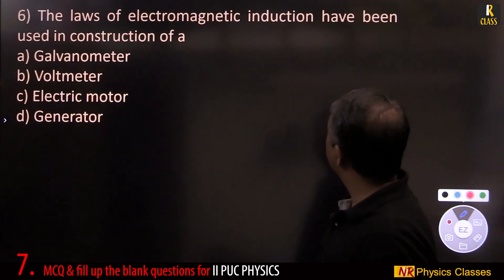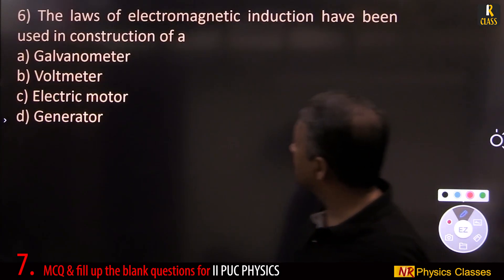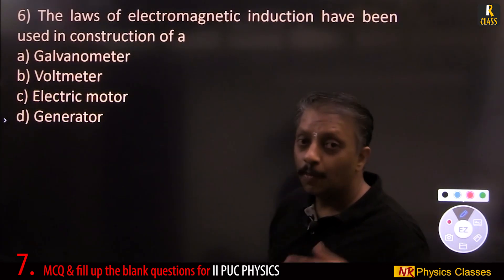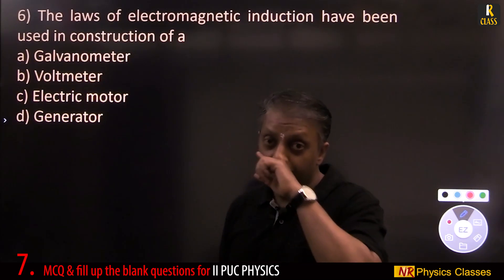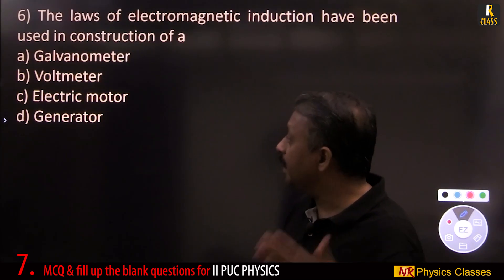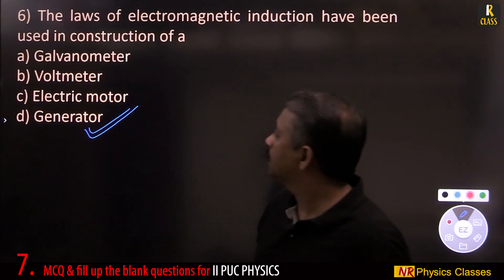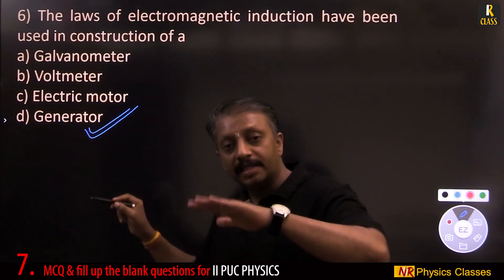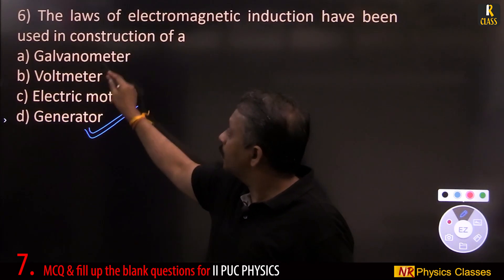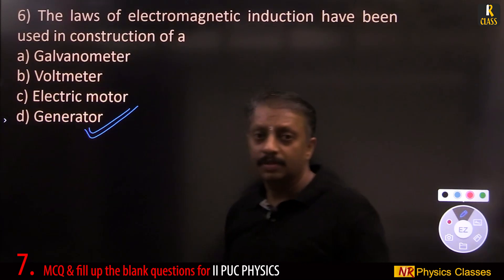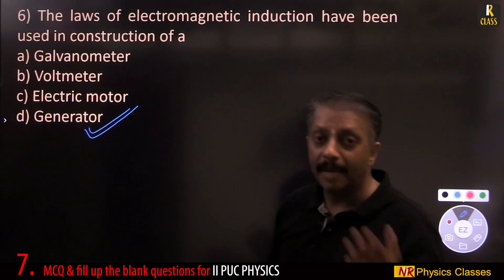The laws of electromagnetic induction have been used in the construction of generator. EMF should be induced, current should be induced. Motor is electric to mechanical. Voltmeter, galvanometer, electric to mechanical.